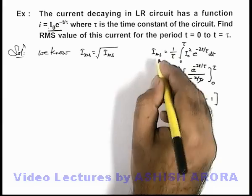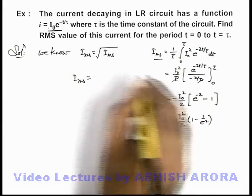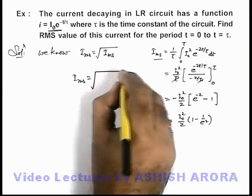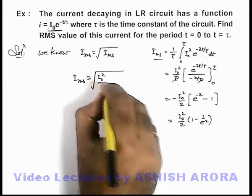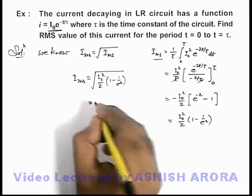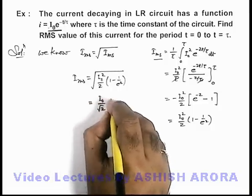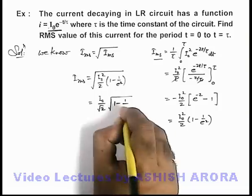If I substitute this mean square value here, I'll get the RMS value of this current for the period zero to tau. This will be root of i-not square by 2 times (1 minus 1 by e square). So this will give me i-not by root 2 times root of (1 minus 1 by e square). That will be the answer to this problem.